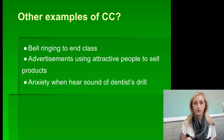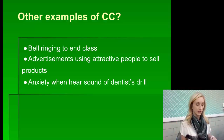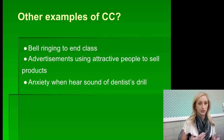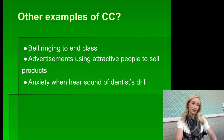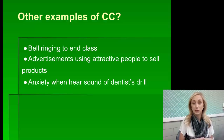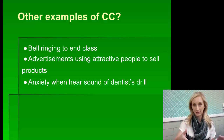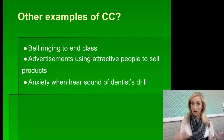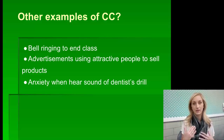Some other examples of classical conditioning in everyday life: the bell ringing to end a class — we've associated the bell with the end of class, so we react to the bell. Advertisements using attractive people to sell products — we make the association between the attractive person and the product, and our response is wanting to get it. And anxiety when we hear the sound of a dentist drill, if you're someone who's afraid of the dentist or has had tooth problems — these are all naturally occurring associations.